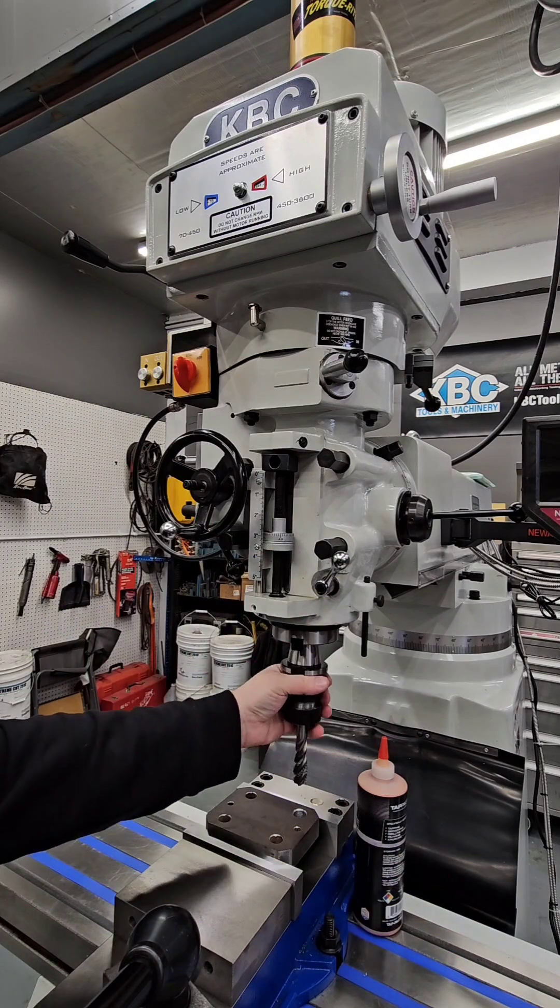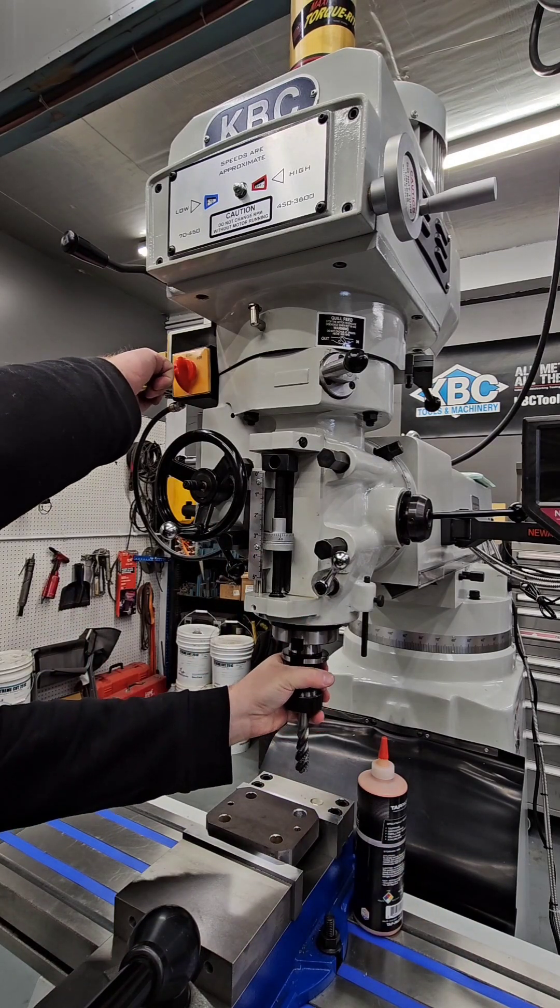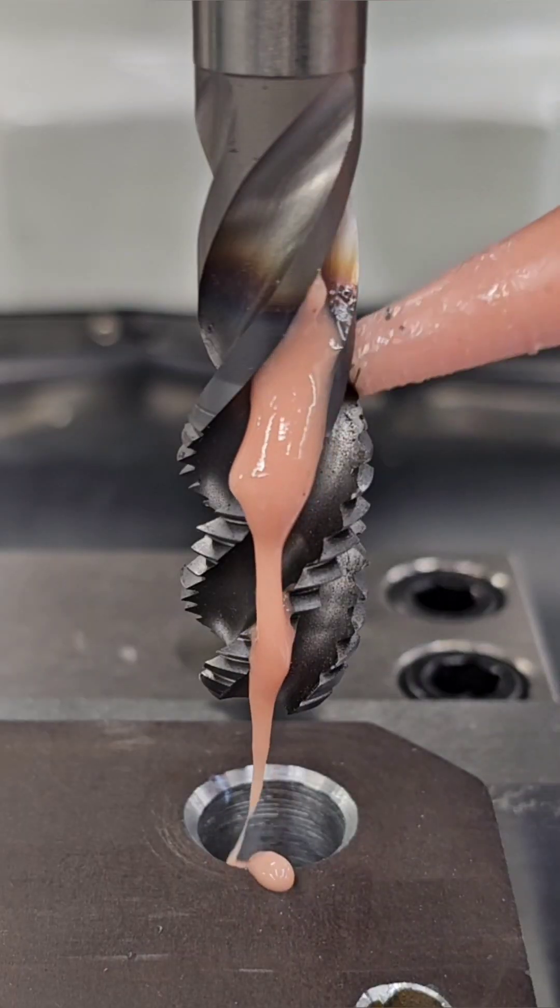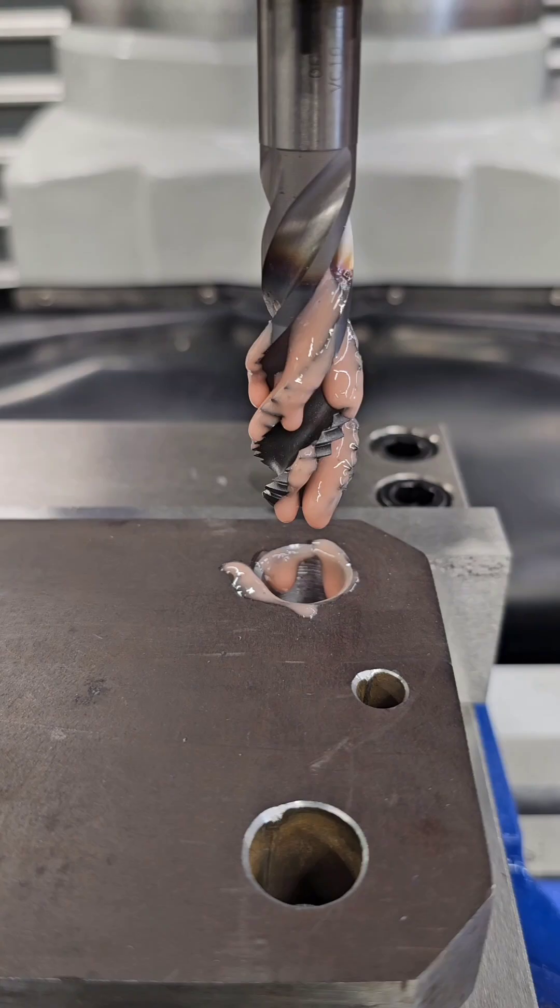Here we are using a 3 quarter 10 spiral flute tap. This is the most versatile tap type as whether your hole is a through hole or a blind hole, one tap can do pretty much everything.